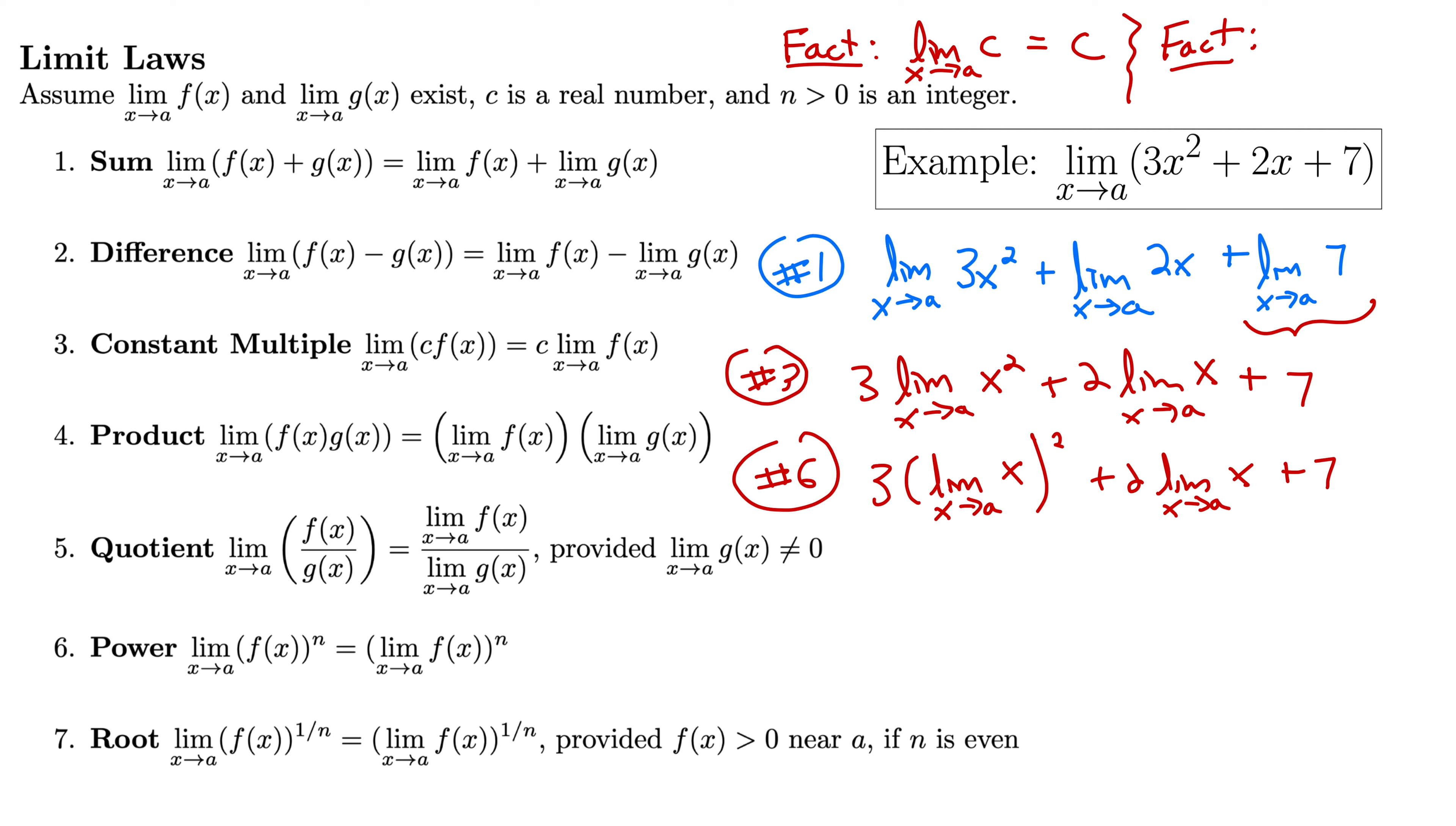Time for another fact. The limit as x goes to a of x is simply a. If we get it all the way down to where we're just taking the limit as x goes to a of x, well, that's just a. So back to our expression, we have 3, limit as x goes to a is a, but that's squared, plus 2a plus 7.